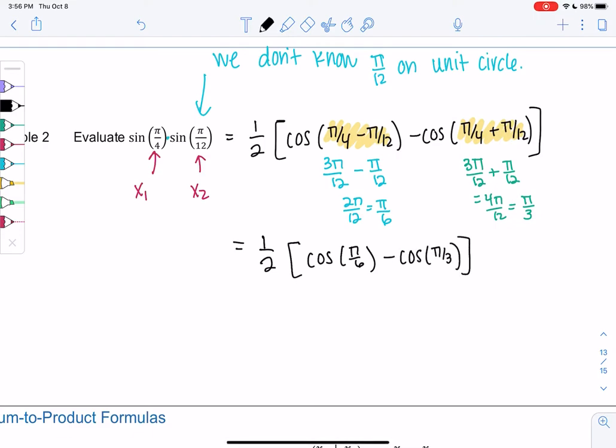So I'm just going to rewrite it. One-half cosine π/6 minus cosine of π/3. And we're happy, because both are on the unit circle. And we're going to continue to use the unit circle. We're not using a calculator, because it's not giving us exact answers. And we want exact values.